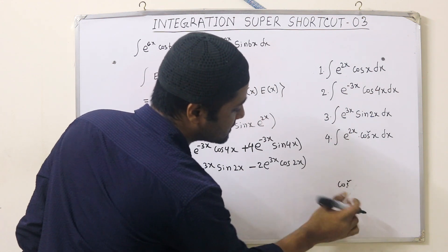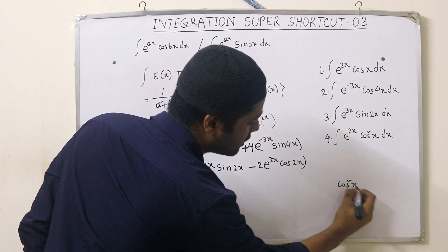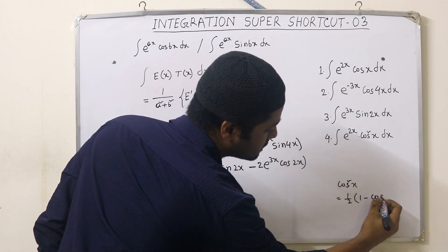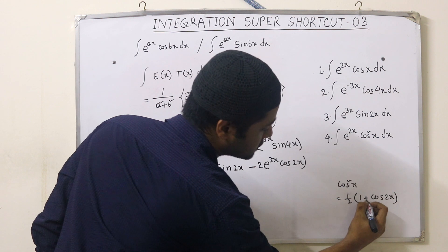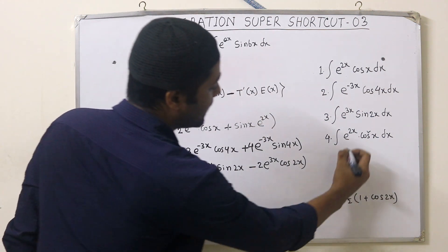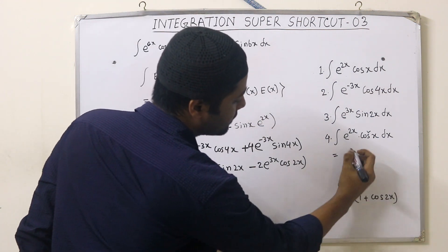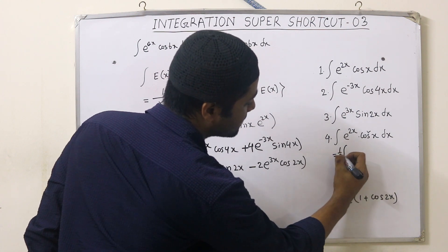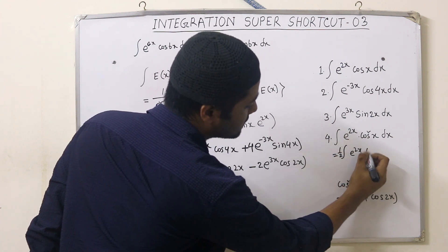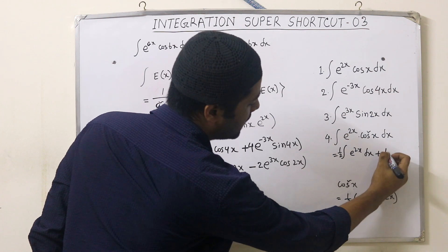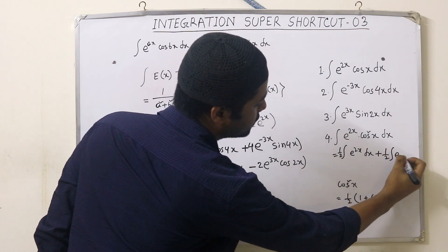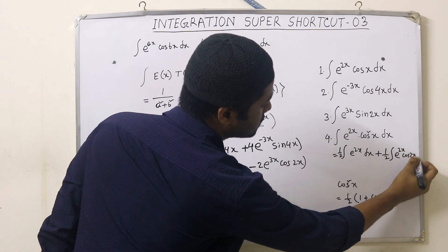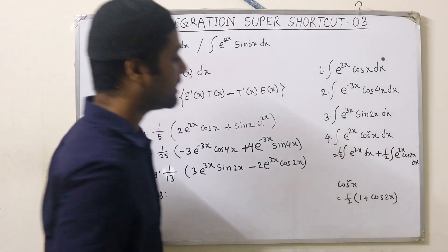What do we have to do? Cos² x equals half of 1 plus cos 2x. So the integration becomes: half of integral of e^(2x) dx plus half of integral of e^(2x) · cos 2x dx.